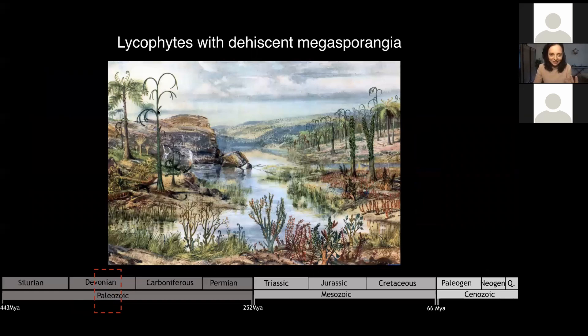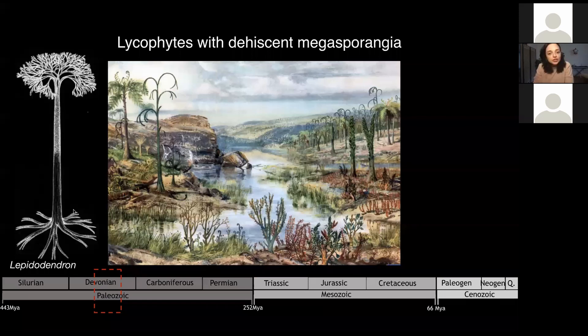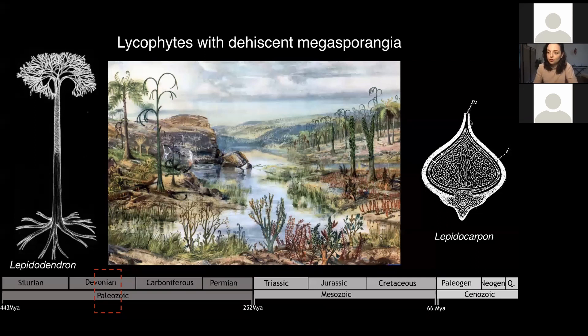We see heterospory in lycophytes, like club mosses. During this period there was enormous diversity of lycophytes, including amazing giant lycophytes — like Lepidodendron — that were up to 30 meters tall. Another genus, Lepidocarpon, is also extinct and had structures that resemble a seed — they are functionally convergent with a seed, but they are not seeds. They have a megagametophyte surrounded by a protective structure, but the difference is that this structure dehisces, releasing the female gametes and making them more accessible for male gametes.